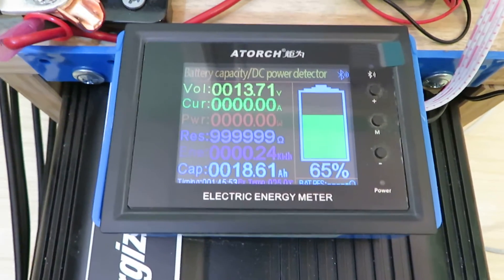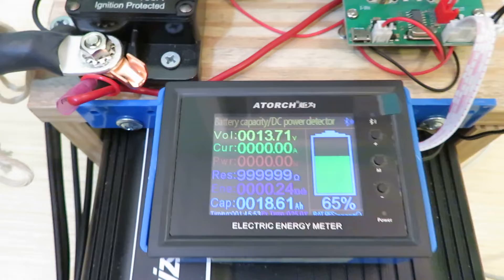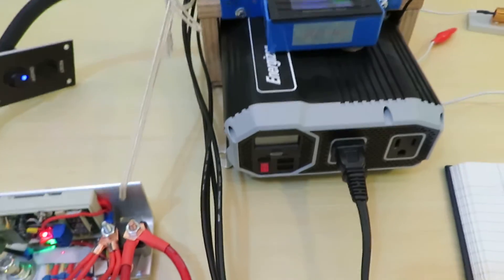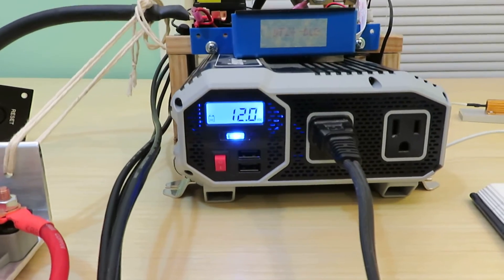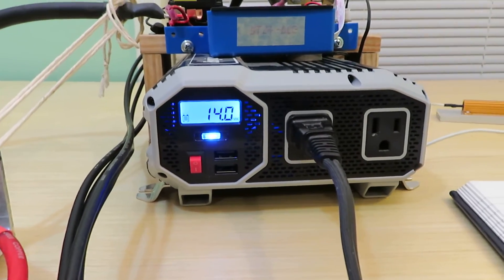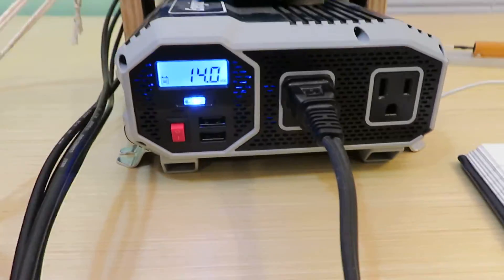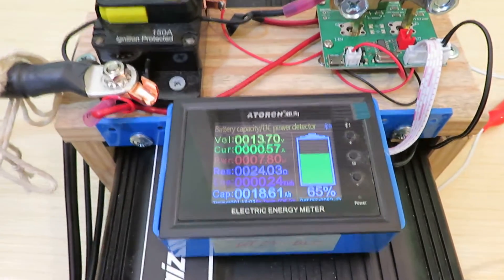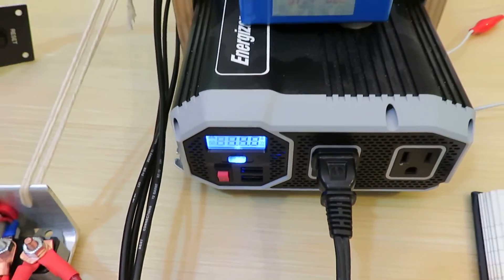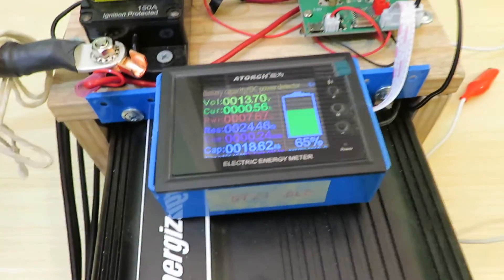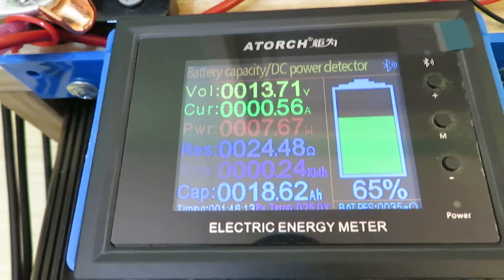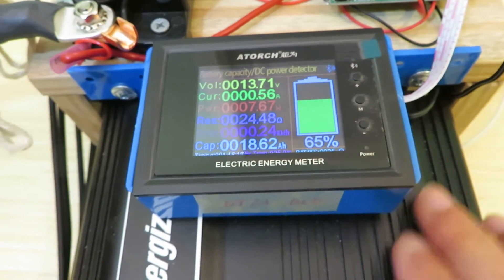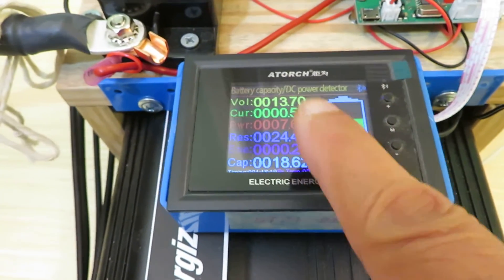And it's 13.7 volts no current yet. So let me turn the inverter on. Okay the inverter is on. It's 14 volts so the inverter and my shunt voltmeter is not exactly the same. So right now it's drawing about 0.56 amps just to support the inverter itself. So the overhead is 0.56 amps. So let me turn on the heater.